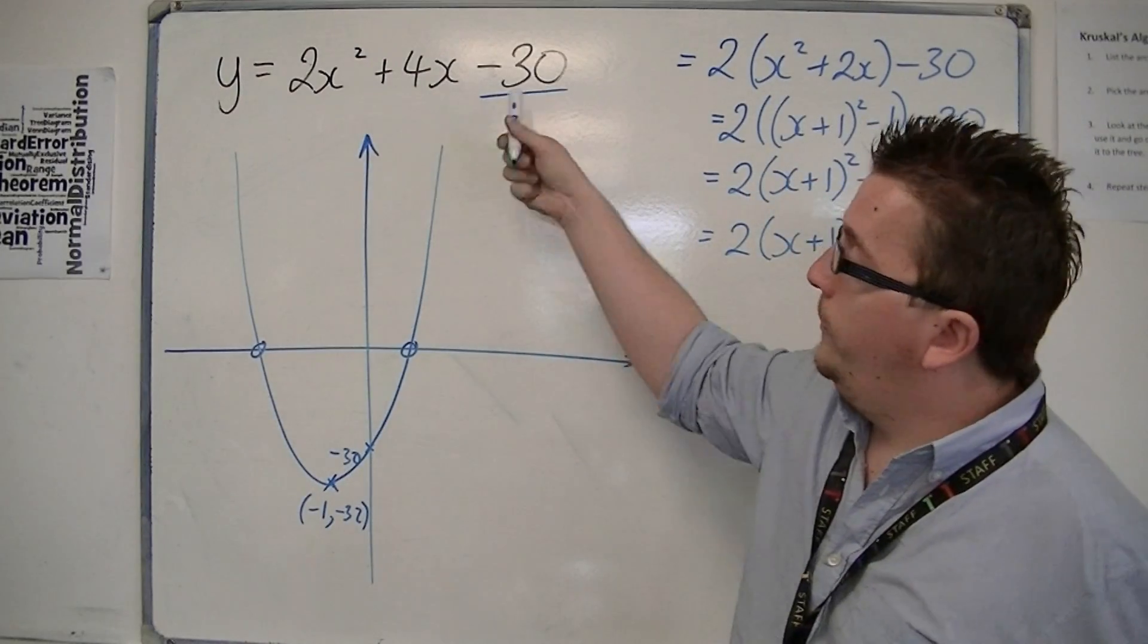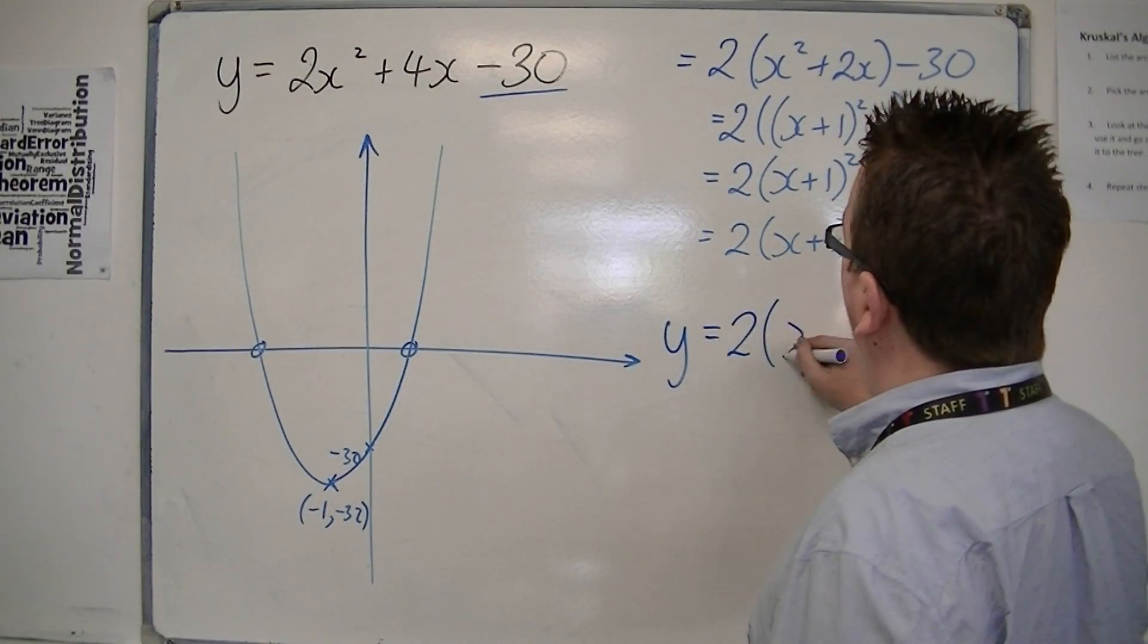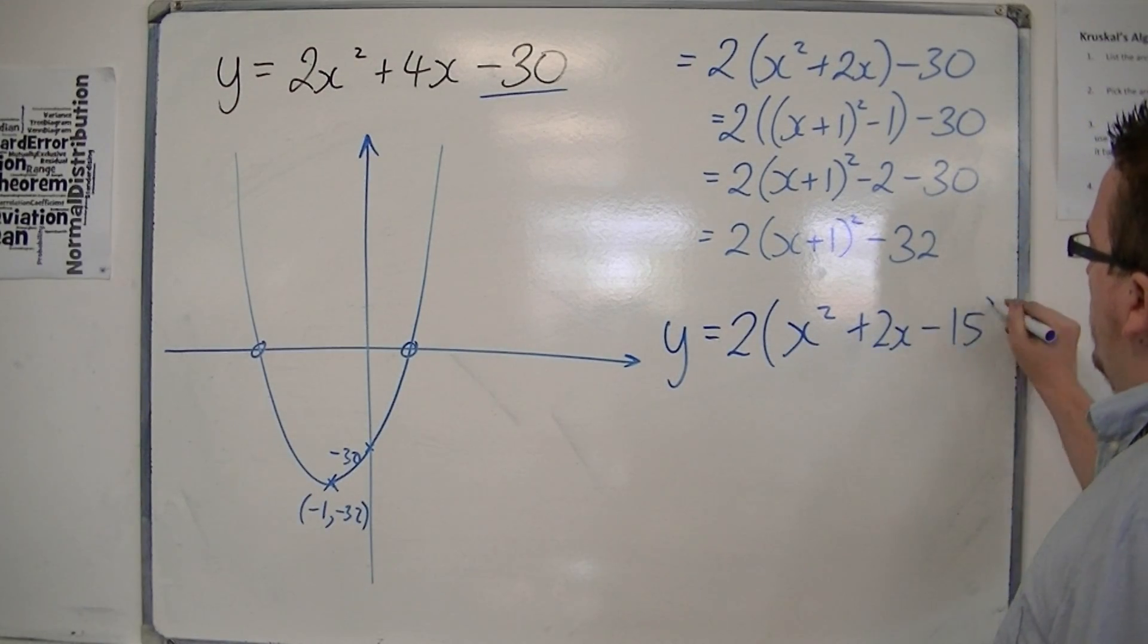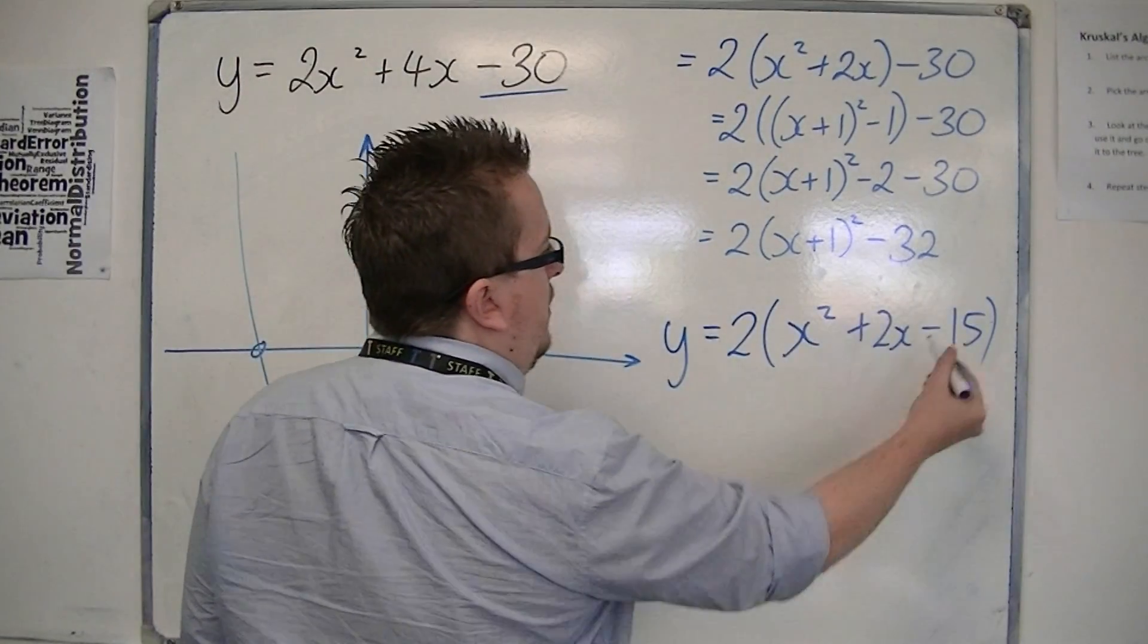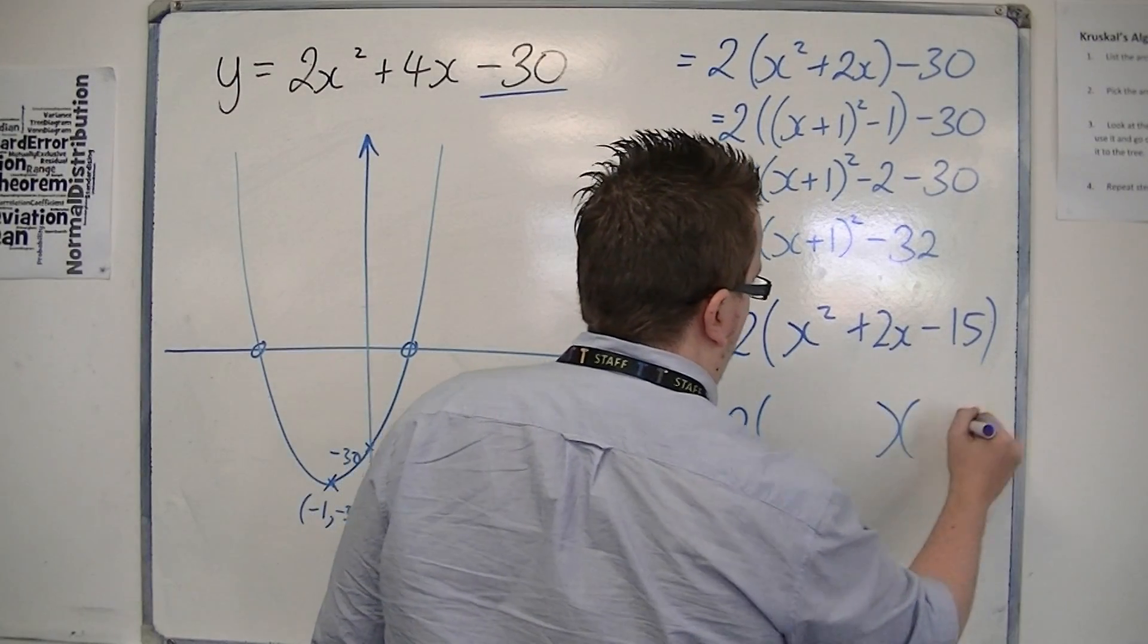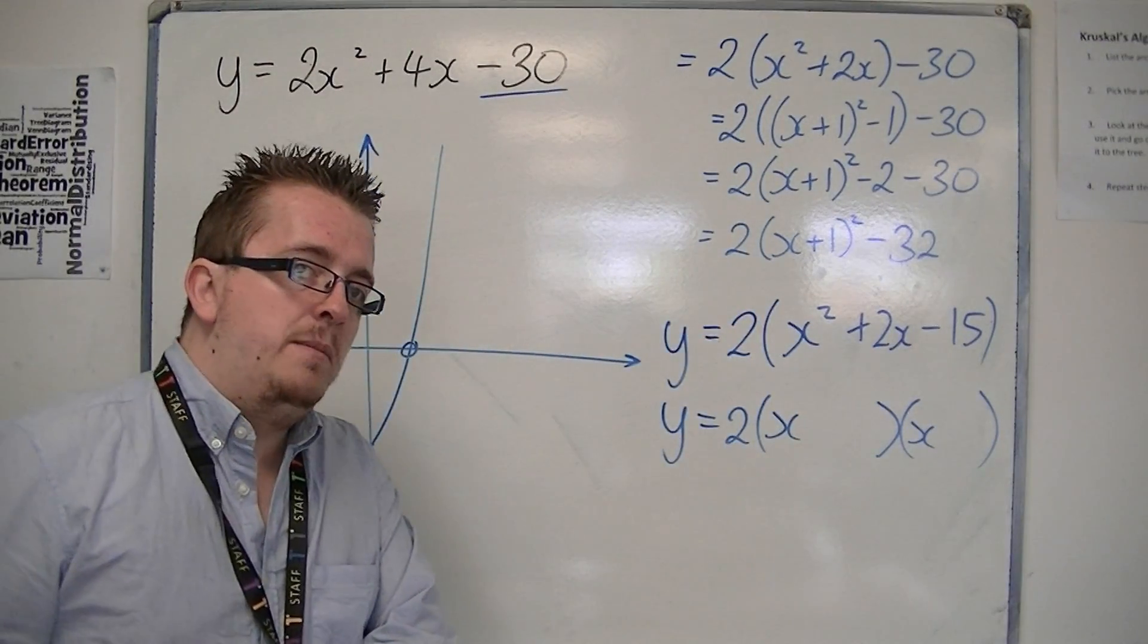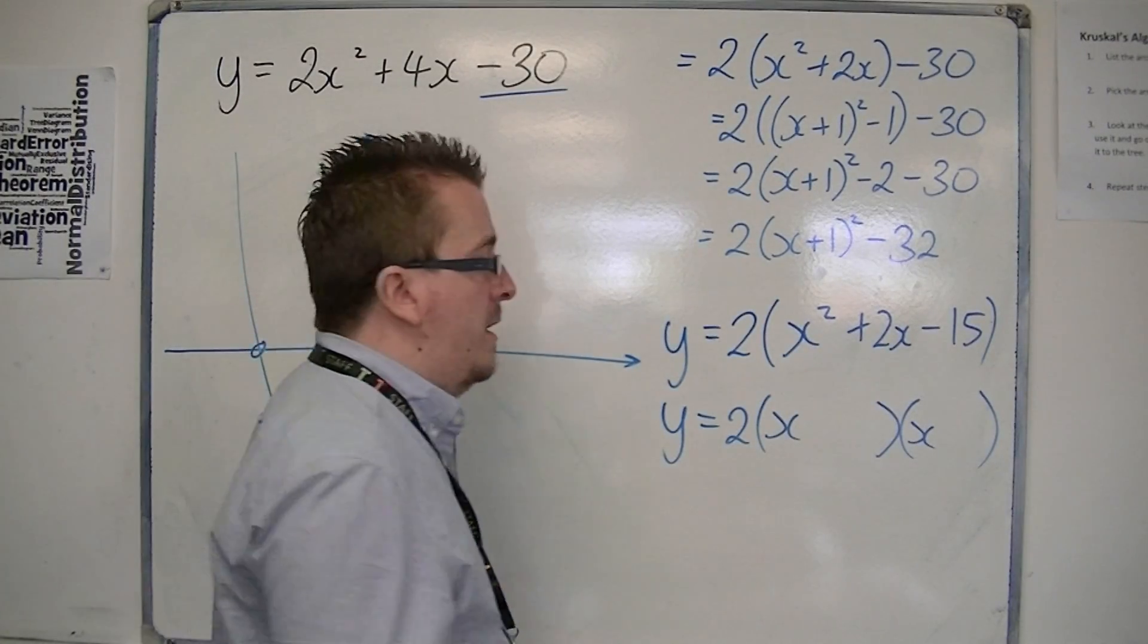So I can take 2 outside of the whole thing, like that. And then I can factorise this bracket. So we're going to have x and x, and two numbers that multiply together make minus 15, but add together to make 2, would be plus 5 and minus 3.